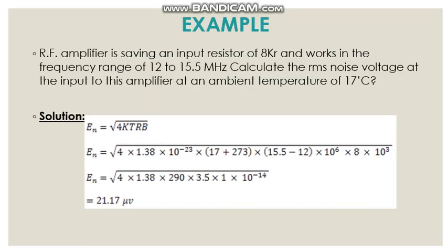Example: An RF amplifier has an input resistor of 8 kΩ and works in the frequency range of 12 to 15.5 MHz. Calculate the RMS noise voltage at the input to the amplifier at an ambient temperature of 17°C. Solution: En = √(4KTRb), where K = 1.38 × 10⁻²³, T = 17 + 273 = 290 K, R = 8 × 10³ Ω, and bandwidth B = 15.5 − 12 = 3.5 MHz. The final answer is 21.17 microvolts.